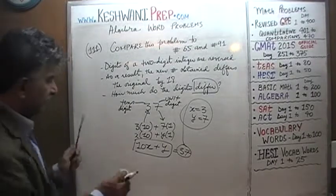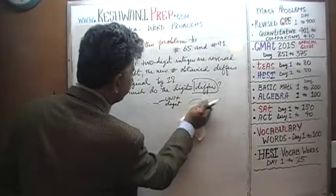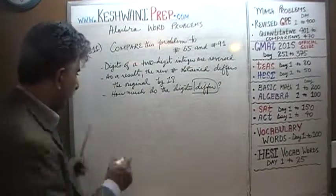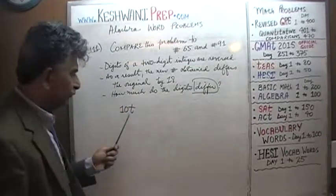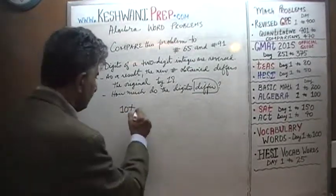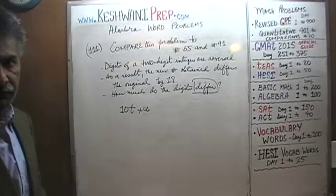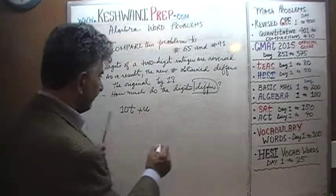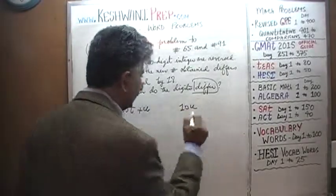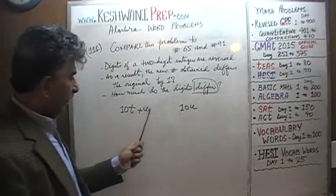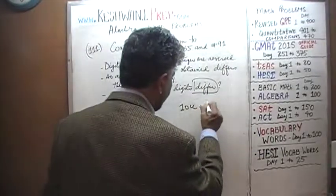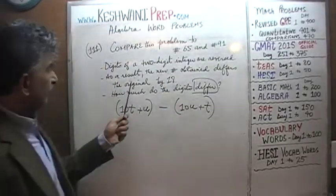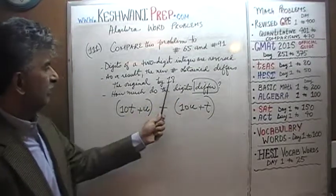Now that we understand it, let's start the process. We're going to make up our two-digit integer: 10 times t — t for the tens digit — plus u. That's our two-digit integer. When we reverse the digits, instead of 10 times t it is going to be 10 times u, and whatever the tens digit is becomes the unit digit. We are told that the difference between the two quantities is 18.